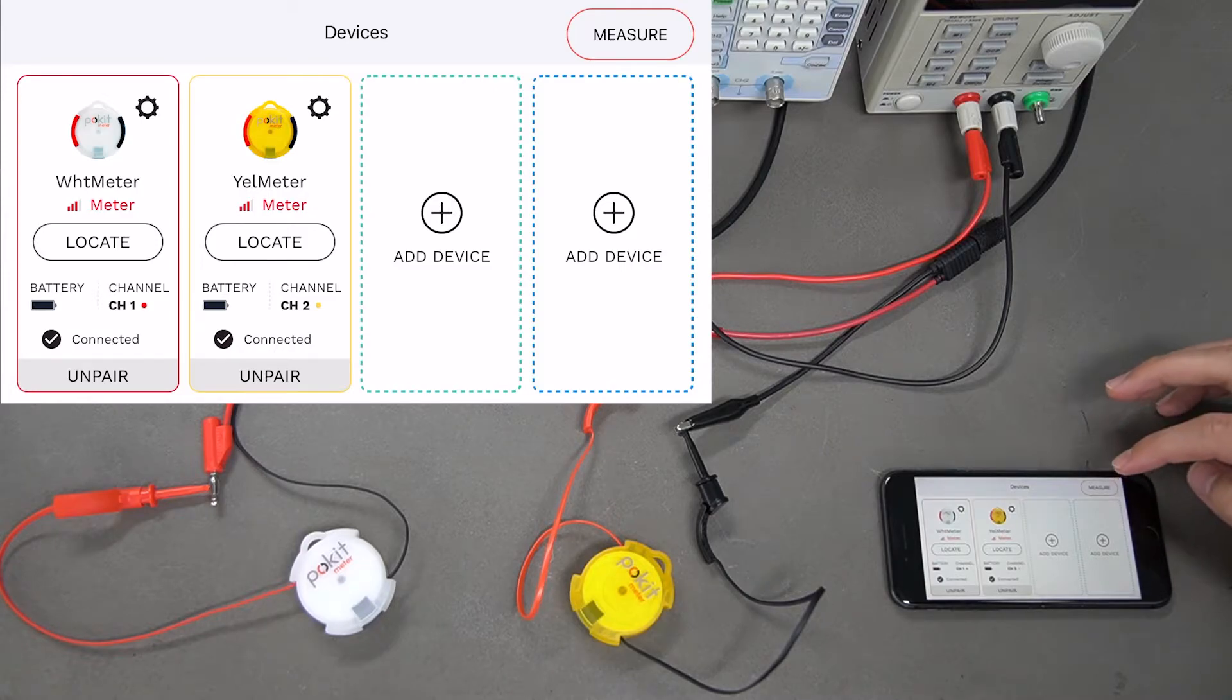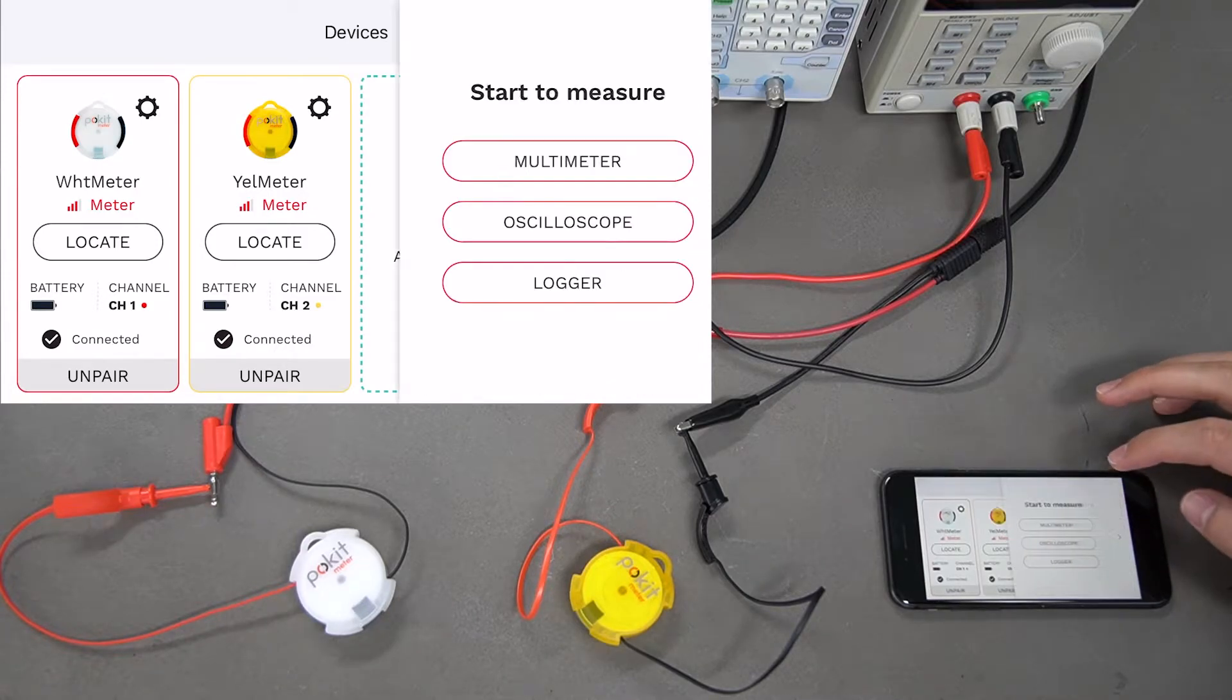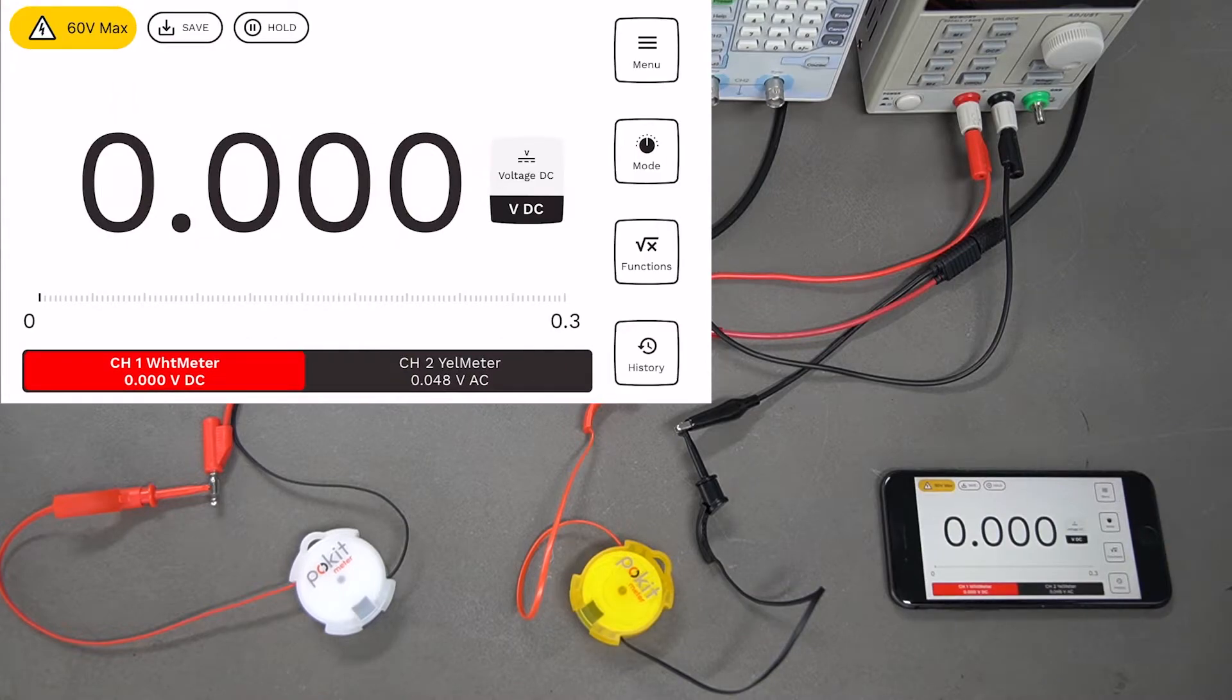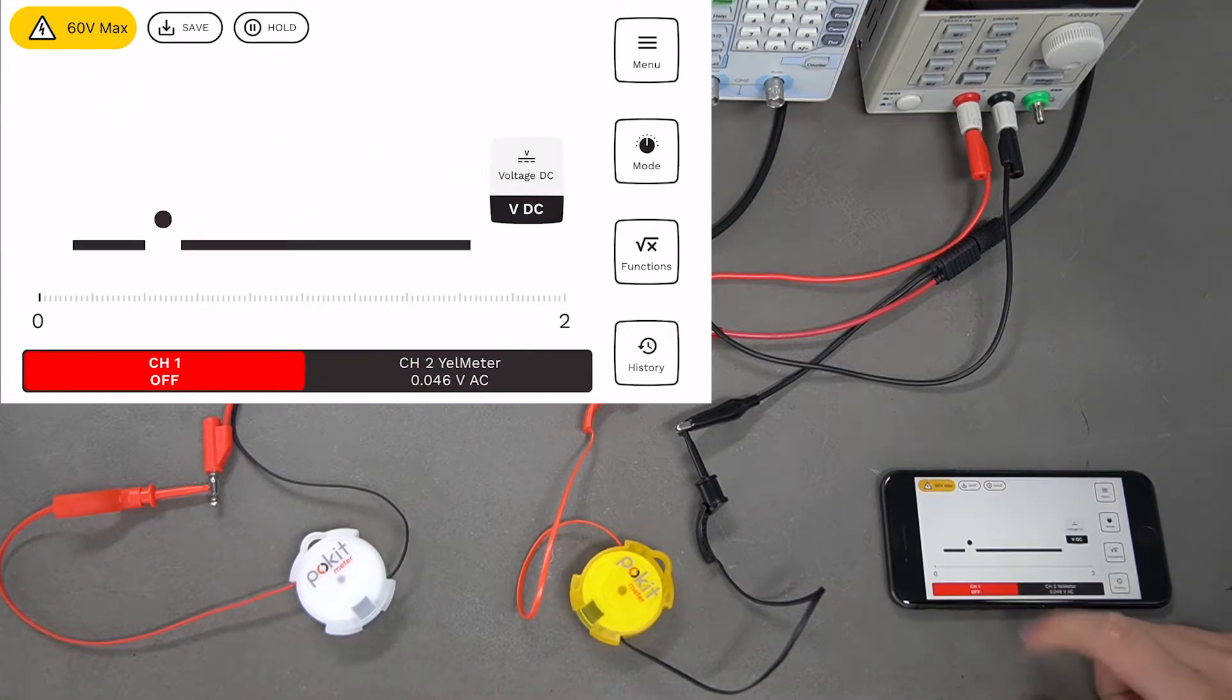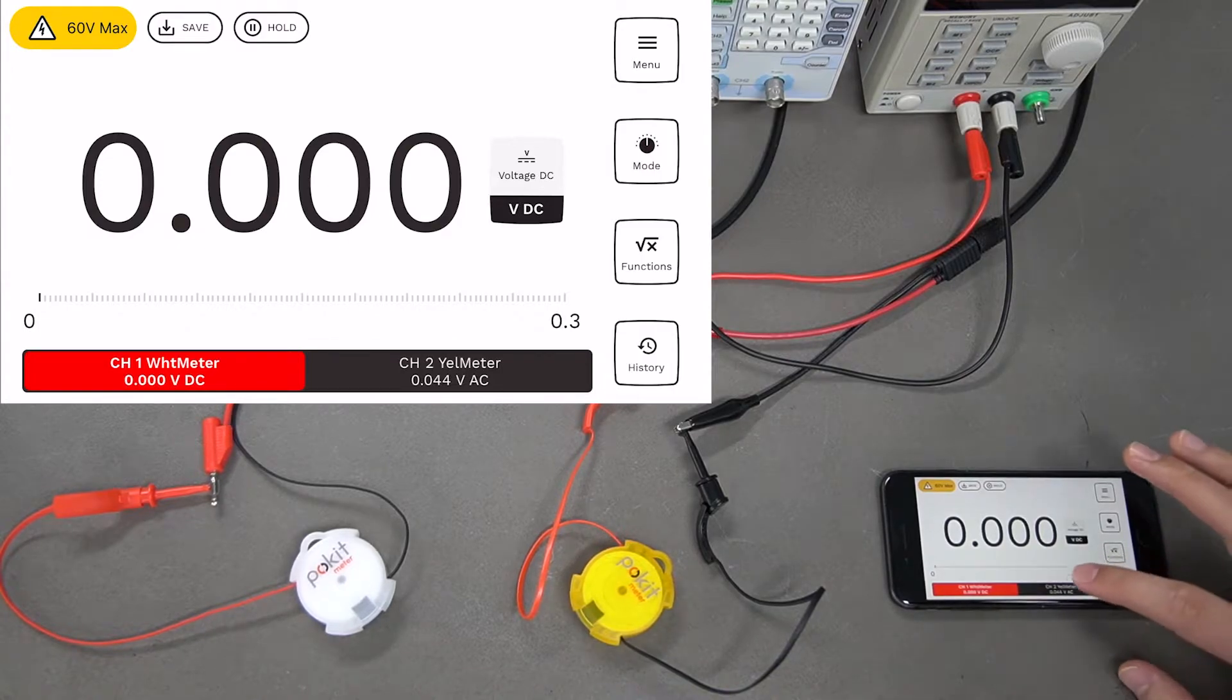To get into multimeter mode, press Measure at the top and select Multimeter. You can see our two channels at the bottom. On the left we've got the white pocket meter, and on the right we've got the yellow pocket meter.